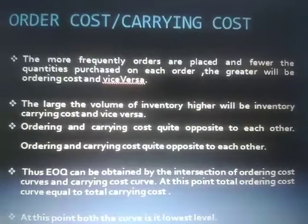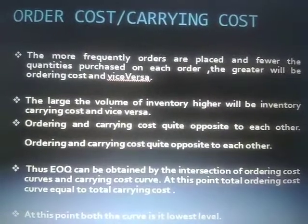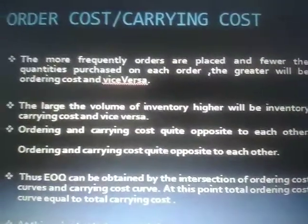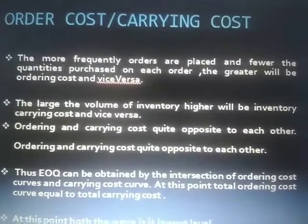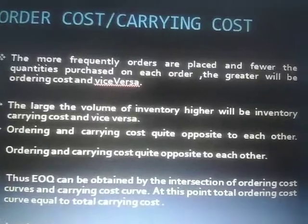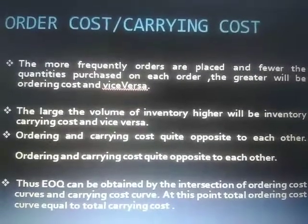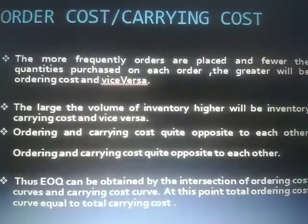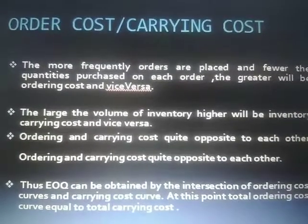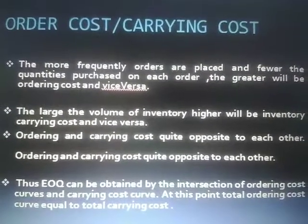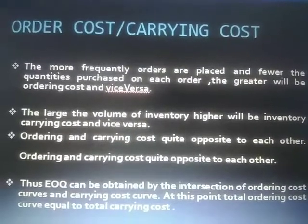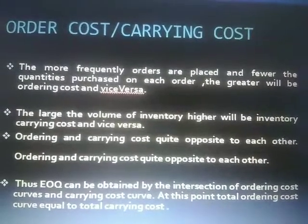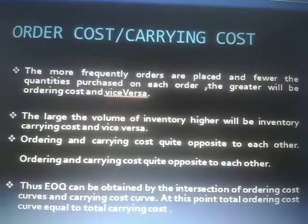Managers should consider both costs together. Taking these costs into consideration, they decide the Economic Order Quantity. At the EOQ level, carrying cost and ordering cost are equal, and both are at their lowest level. This can be represented graphically, where the ordering cost and carrying cost curves intersect — that intersection point is the EOQ level at which the company places its order.